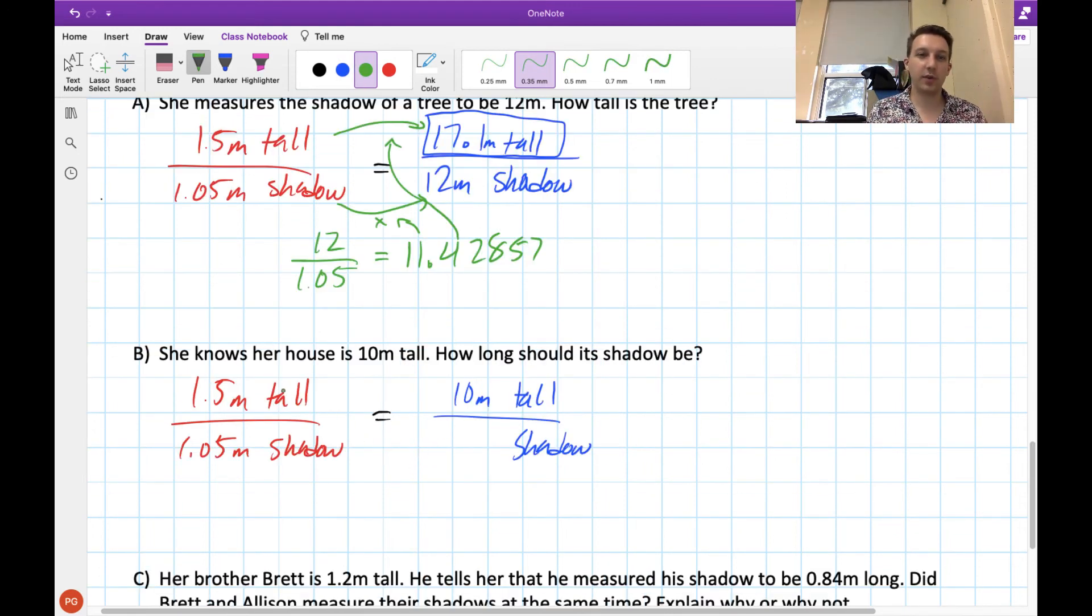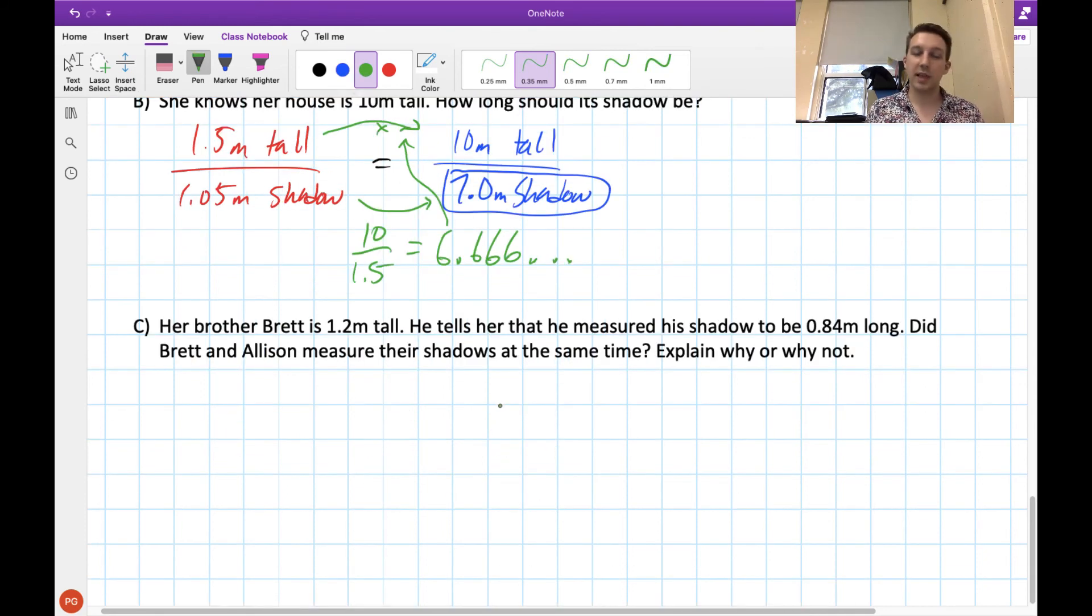We do a similar thing if we want to try and figure out how long the shadow of her house should be. This time we have to compare the tops here, 1.5 to 10. We want to know what number multiplied by 1.5 gives us 10, which is the same as asking 10 divided by 1.5, which comes out to 6.666 dot dot dot. And we can take that answer and multiply 1.05 by this, and if we round to one decimal place, we will get 7.0 meters for our shadow.